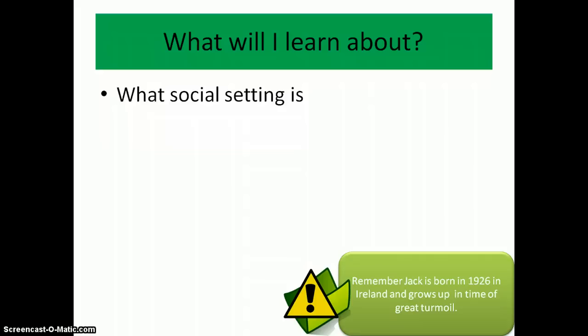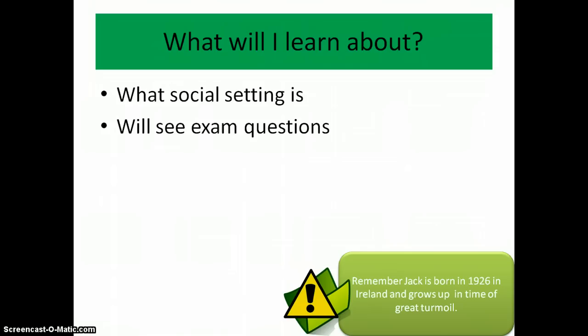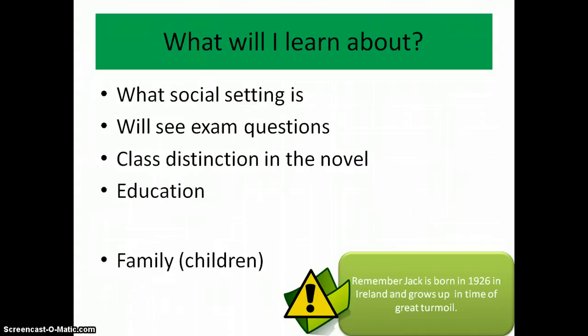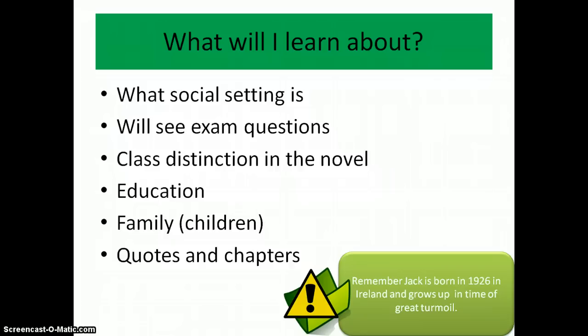So what will you learn about in this screencast? First of all, we're going to look at what social setting is. Then we're going to focus on some exam questions, which will be rephrased to make it a bit easier for you to understand. Of course we're going to focus on class distinction, education, family, and particularly children — which would be Jack himself — and then some quotes and chapters will be included as a guideline for where to read and focus.